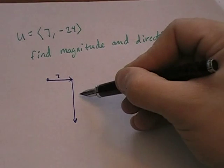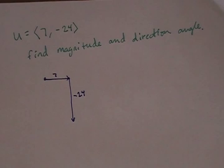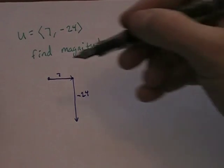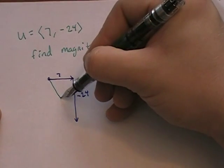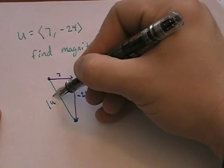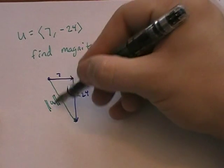You have seven and you have negative 24. That's you. And that's called component form. And the magnitude is going to be this guy right here. And we write it that way. And depending on some books use a double vertical bar, some books use a single vertical bar.